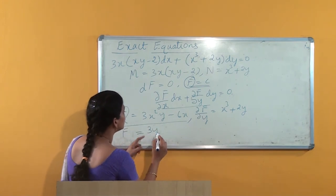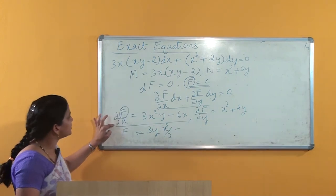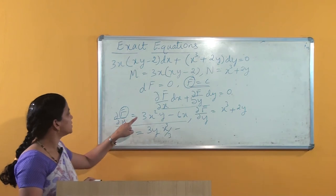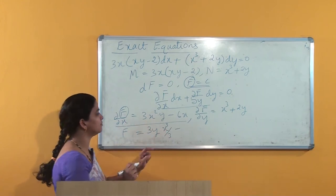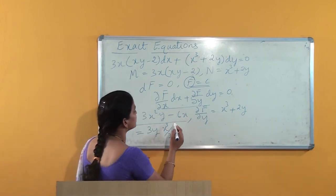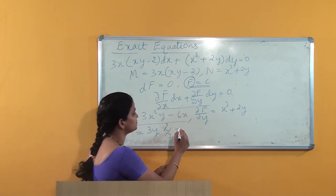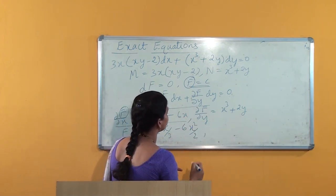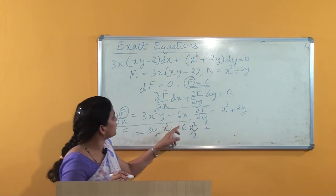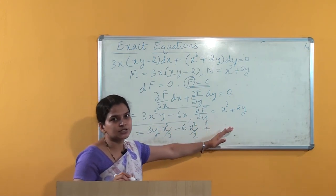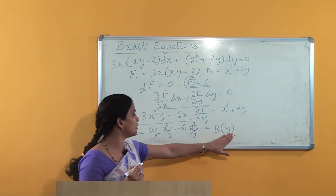Integrating with respect to x keeping y constant: 3y is constant, so the integral of x² gives x³/3, and integration of 6x gives 6x²/2 = 3x². So we get f = 3y·(x³/3) - 3x² plus an integrating constant. But since we kept y constant, that constant may involve y also, so we write it as a function of y, say b(y). We need to find b(y).